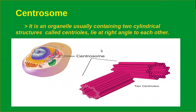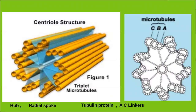Next, we discuss the centrosome. The centrosome is an organelle usually containing two cylindrical structures called centrioles, lying at right angles to each other. Each centriole has a cart-wheel organization, made up of nine evenly spaced peripheral fibrils composed of tubulin protein.